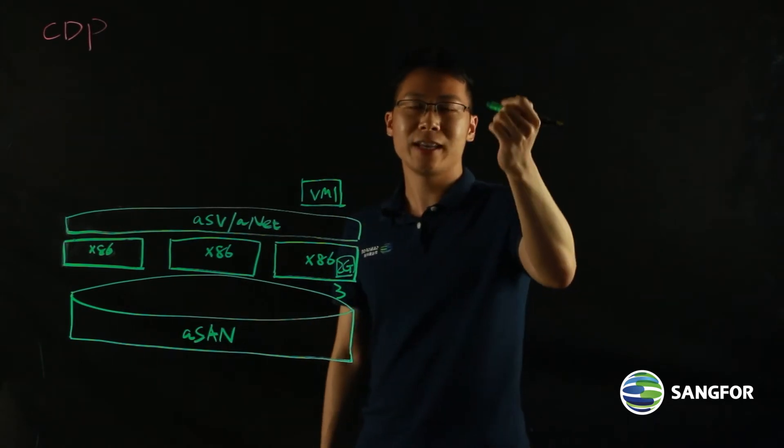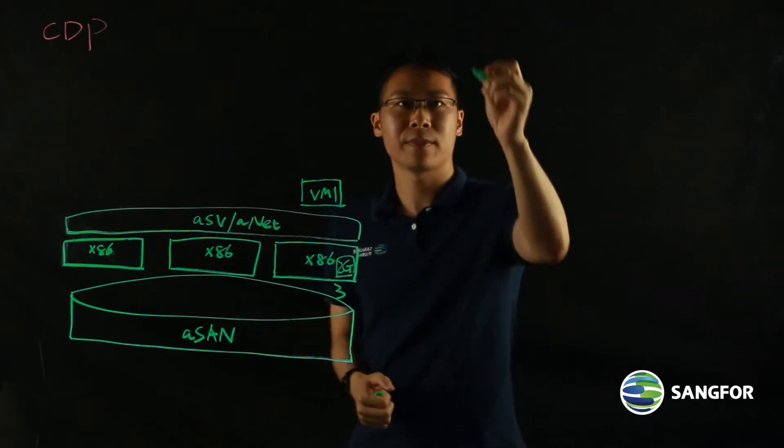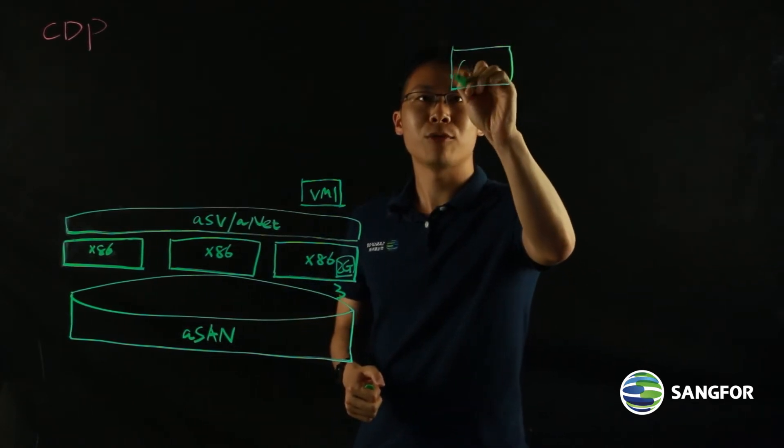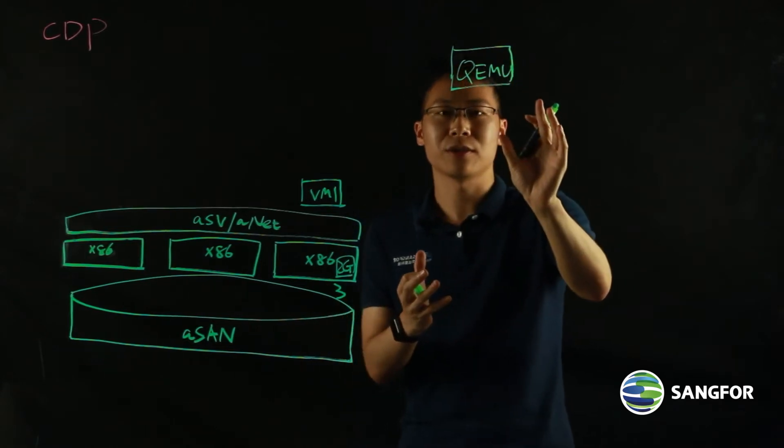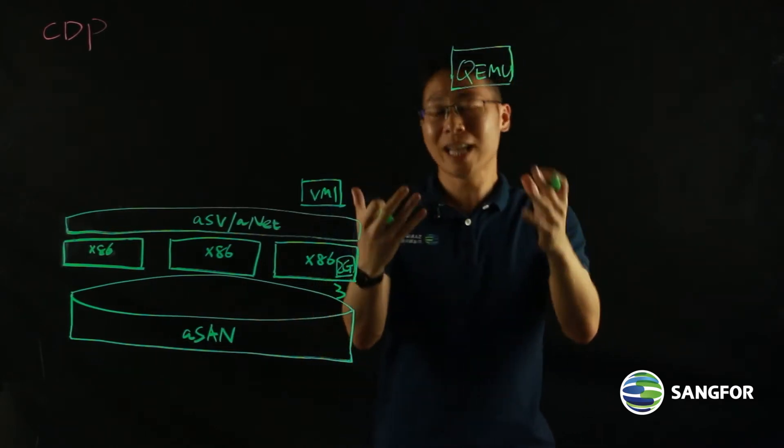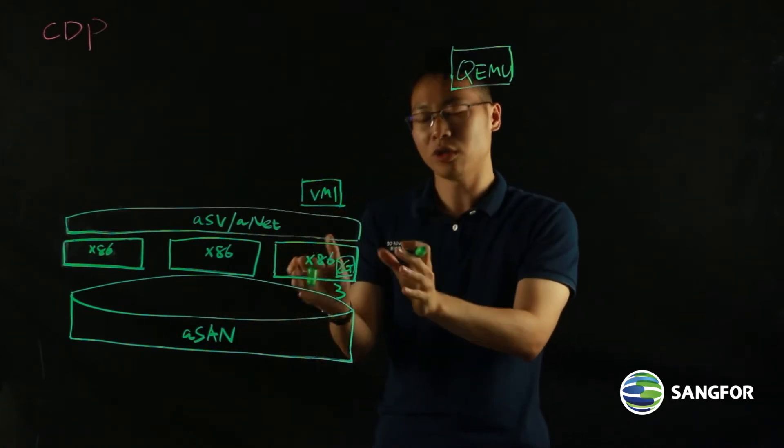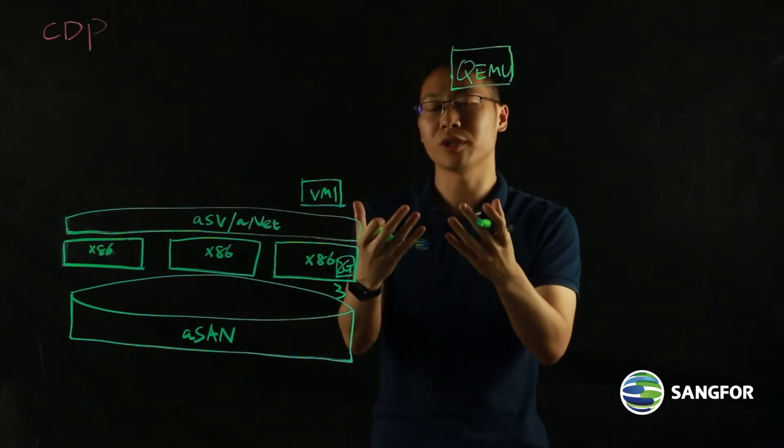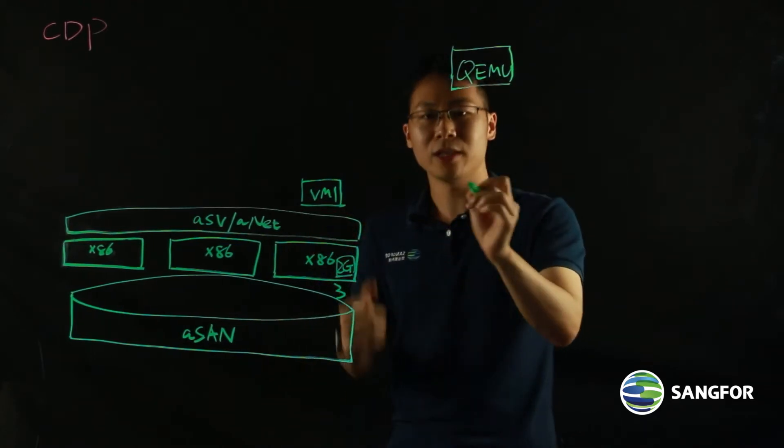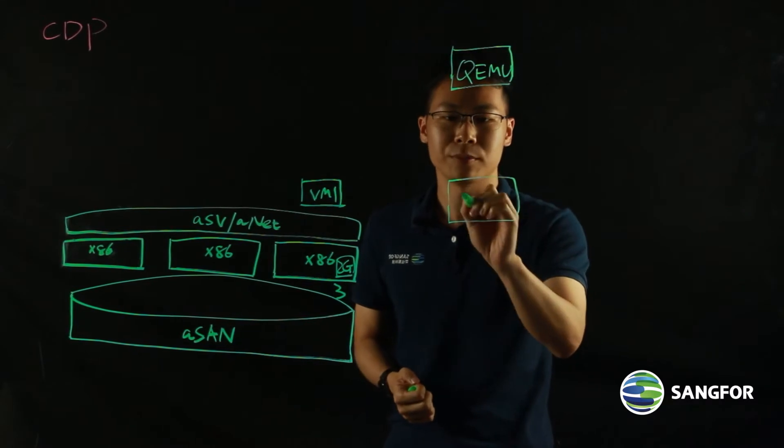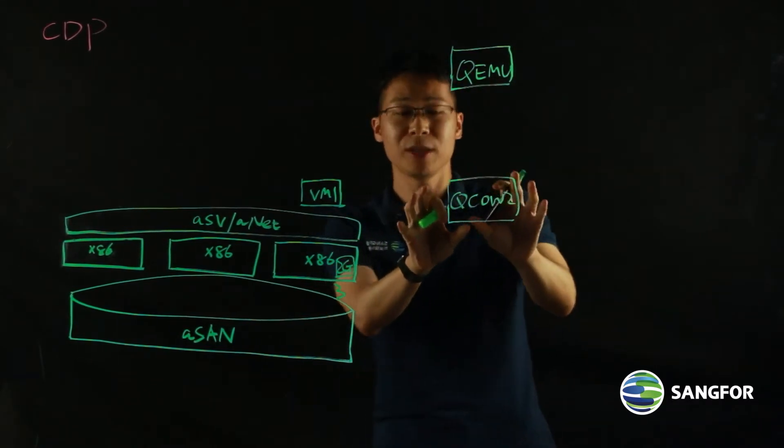As we know, that VM is created by our KVM-based hypervisor. It is actually a QEMU, quick emulator process that is simulating all the resources you have on the servers, and then provision those resources, virtual resources to your VM. The VM is also composed of a QCOW2, which is our file image, image file.